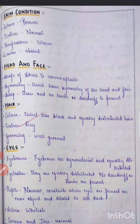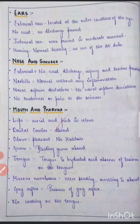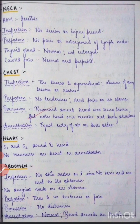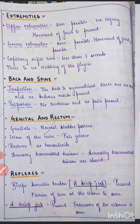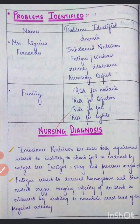Then you'll have to do the head-to-foot assessment: hair, eyes, ears, nose and sinuses, mouth and pharynx, neck, chest, heart, abdomen — I have mentioned this very nicely, you can go through it — then extremities, back and spine, genitals, and reflexes.